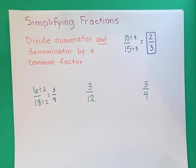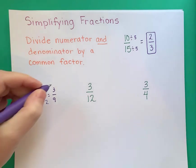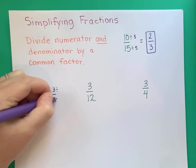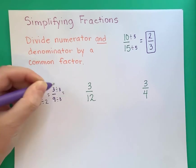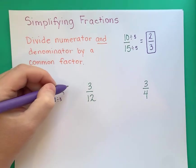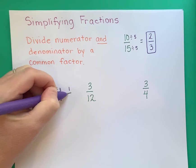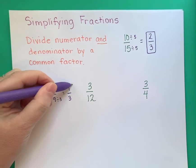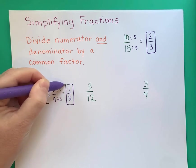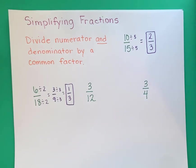Now are we done? No, because 3 and 9 have a common factor of 3. If you can still divide by something, you're not done. So 3 and 9 can both be divided by 3. 3 divided by 3 gives me 1, and 9 divided by 3 gives me 3. Now I'm done, because I can't divide by anything except for 1, and dividing by 1 will just give the same thing.